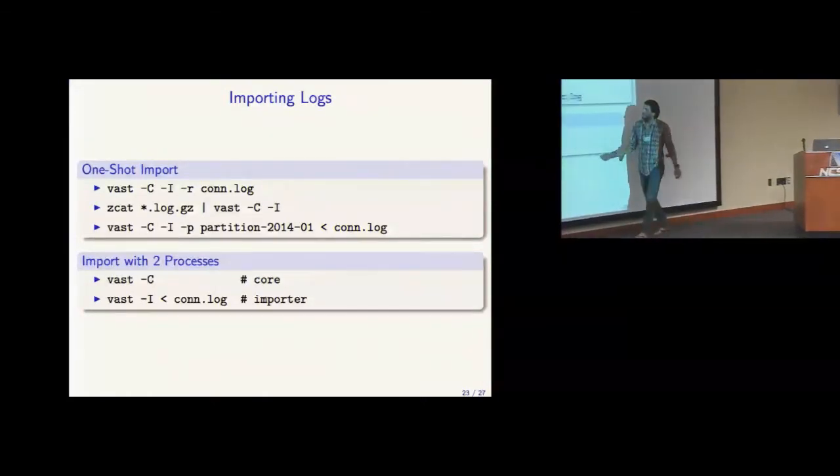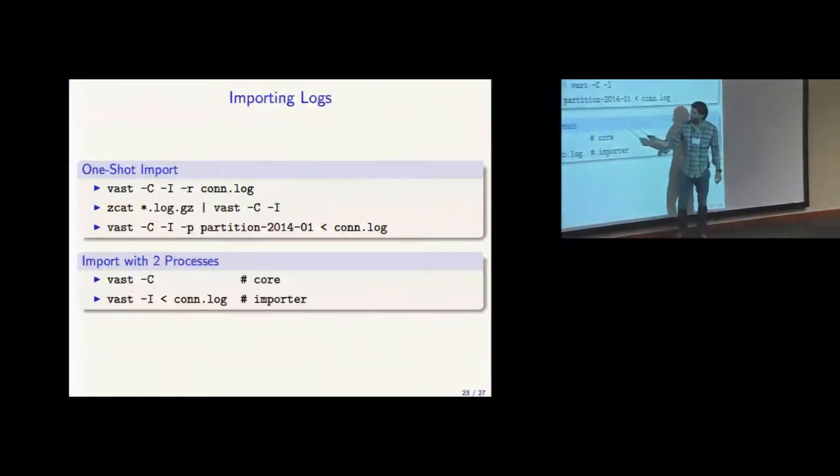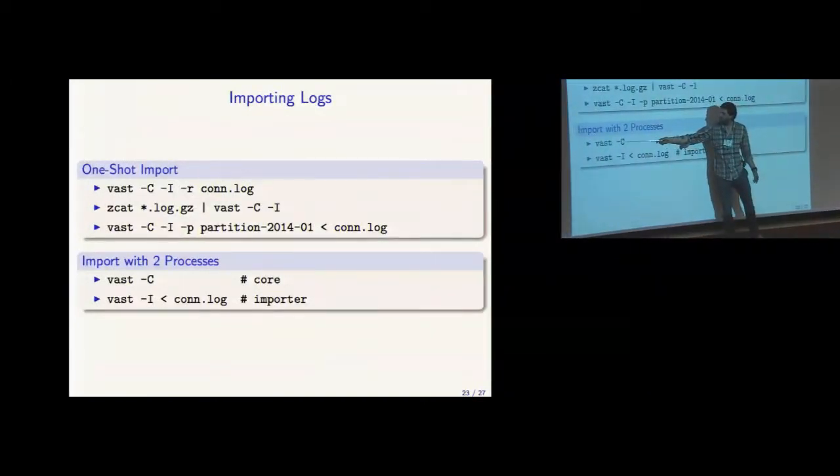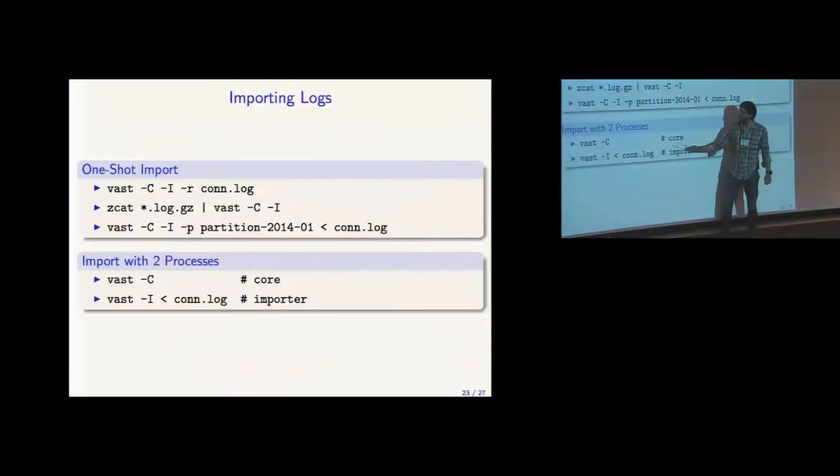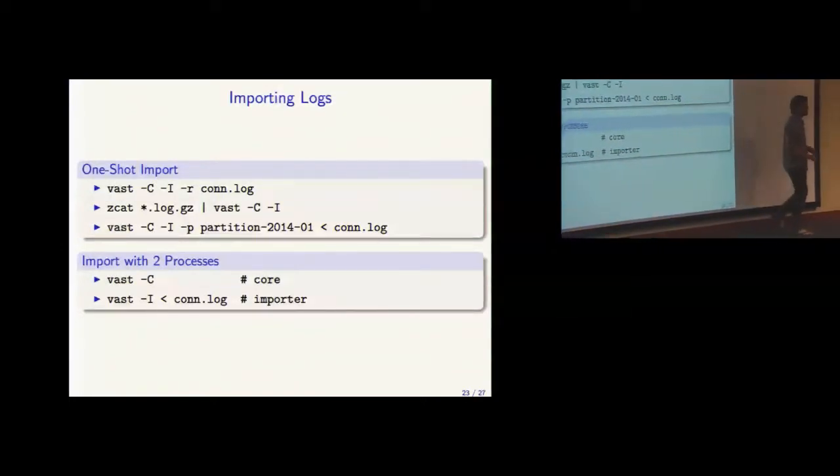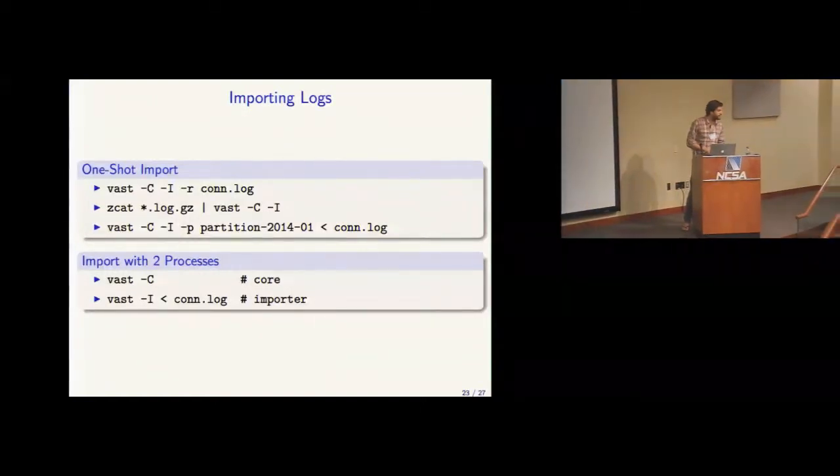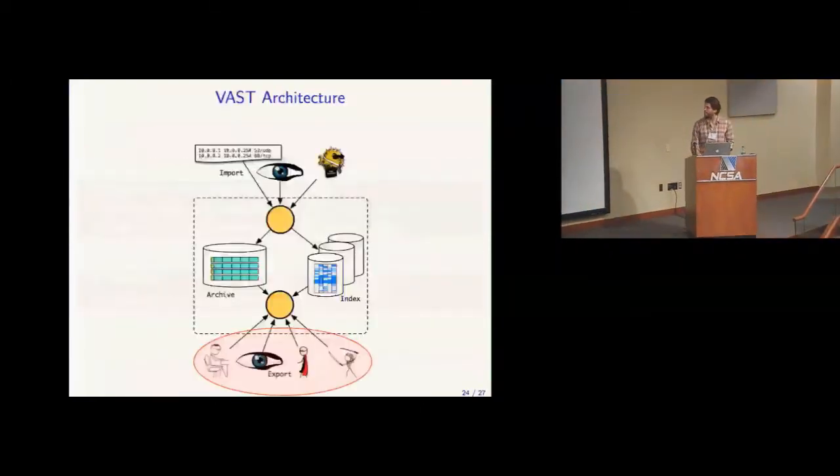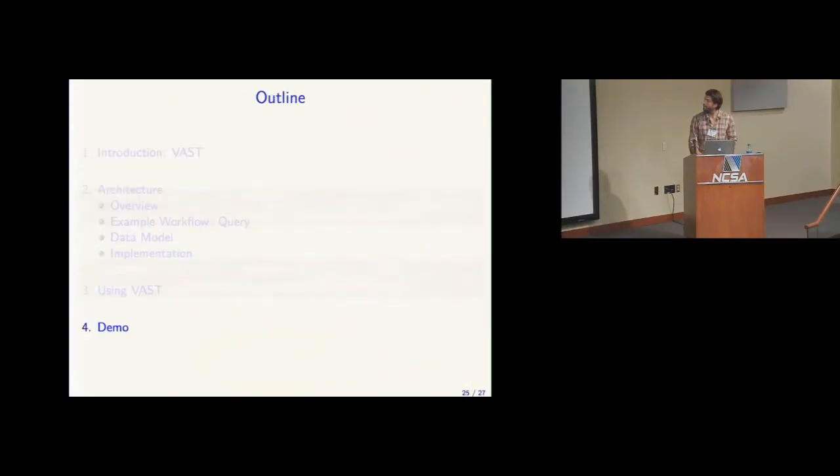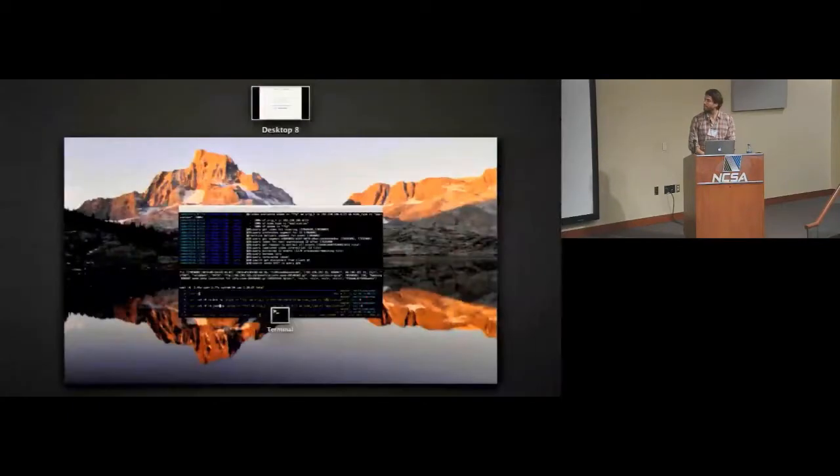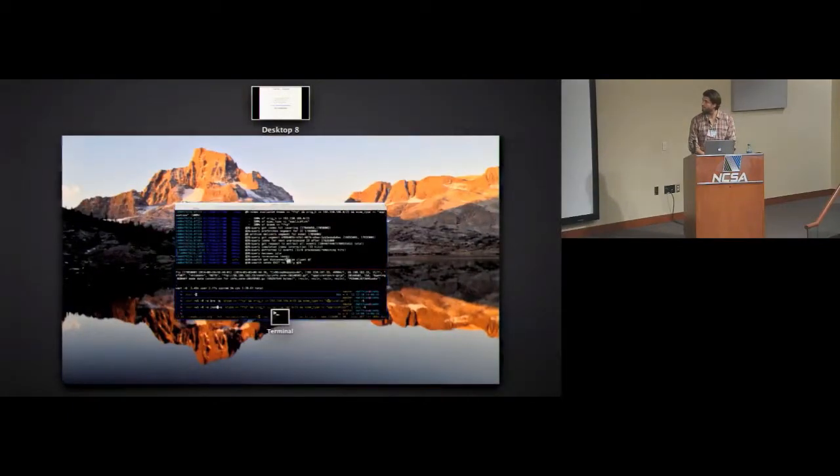I'm going to skip this part actually, which shows the import process and we're going to go right directly into a little bit of usage. So in this case, this shows how to ingest data into the system. You spawn one process, the core, that was the dashed line part that I showed you earlier and then you can import a conn log, for example. So, this kind of concludes my talk with this example. I want to show you a few more examples and then be done.